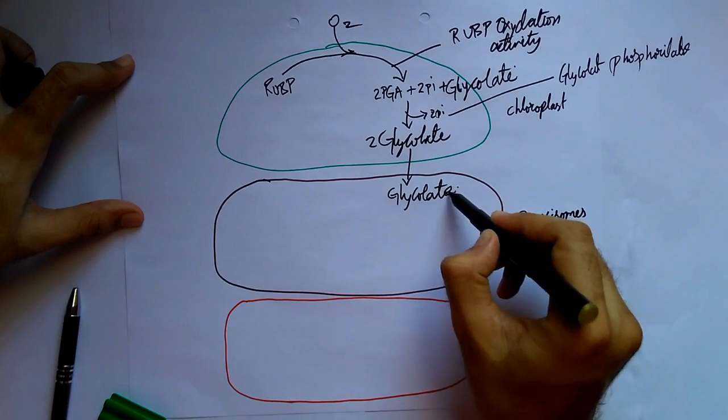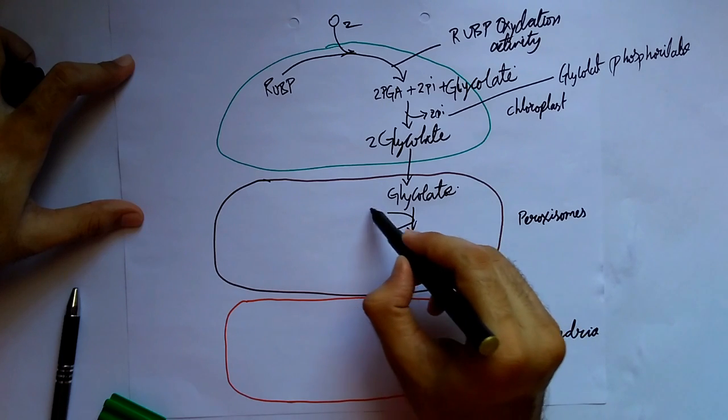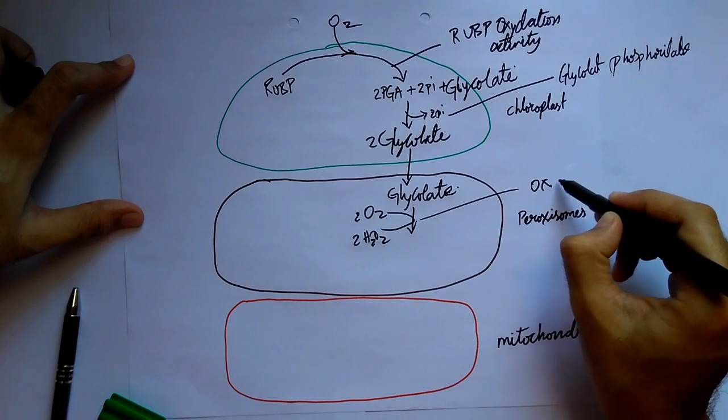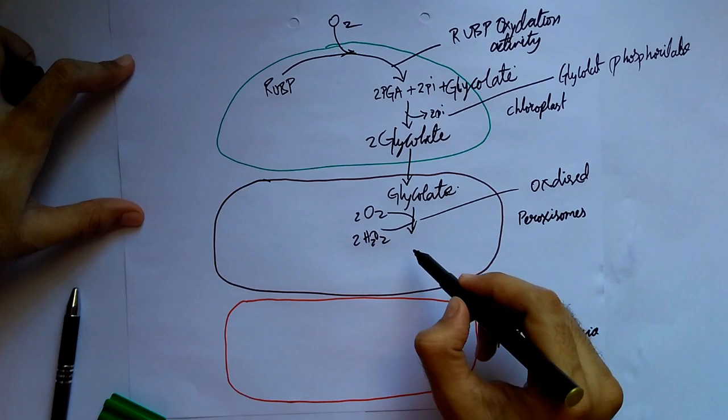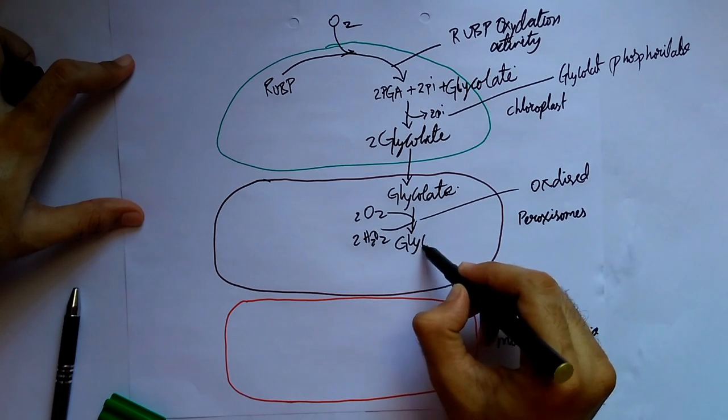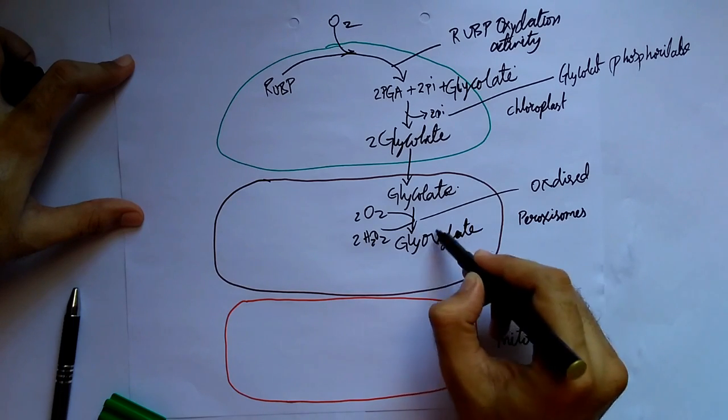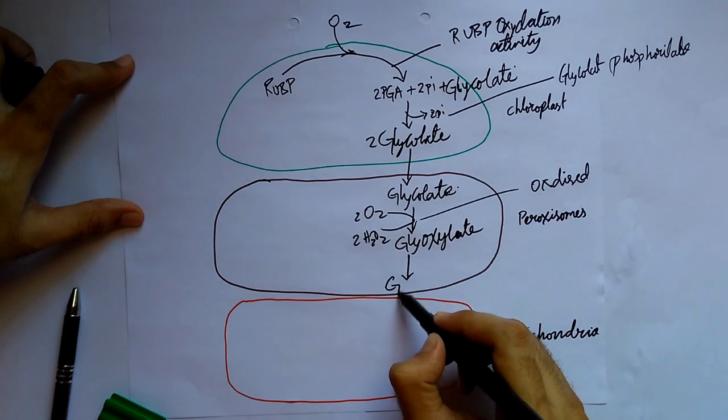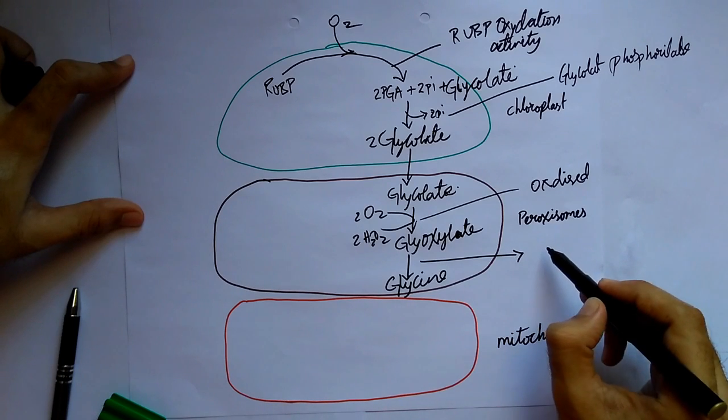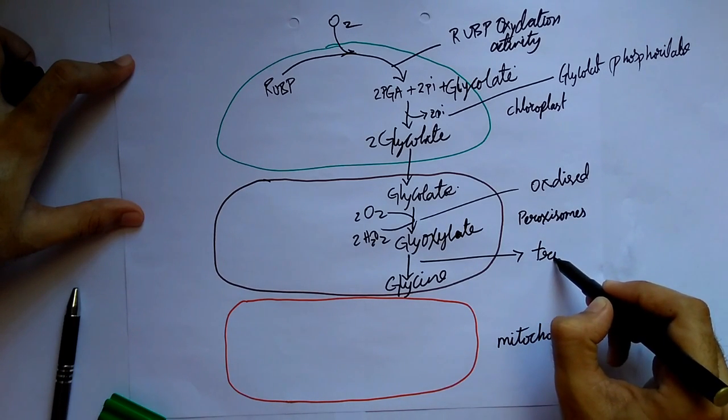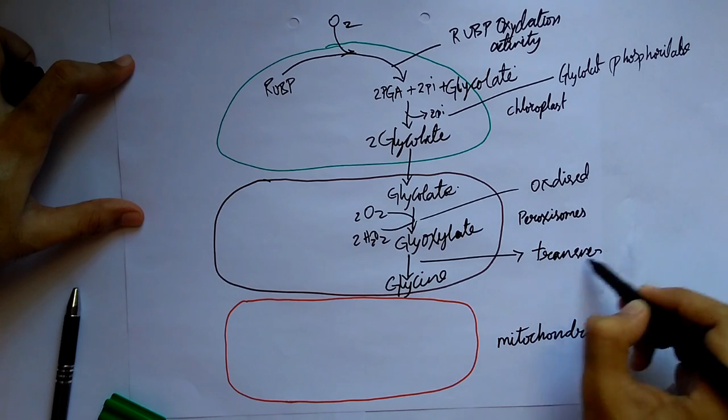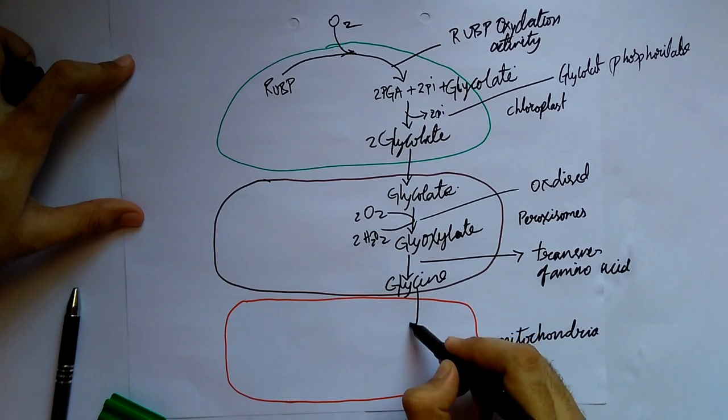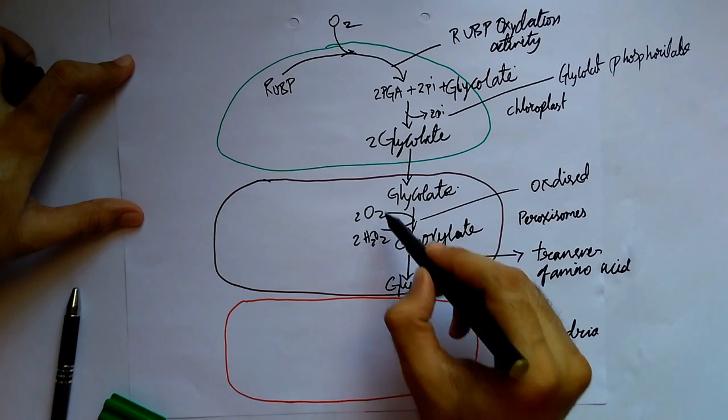This glycolate is oxidized here, and oxidation gives glyoxylate. Then this gives glycine through amino acid transfer, amino acid transferase. This is taken into the mitochondria.